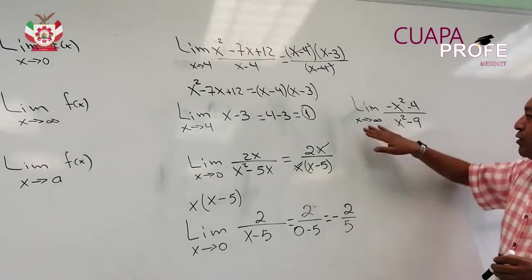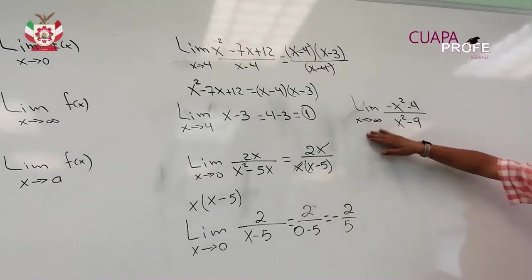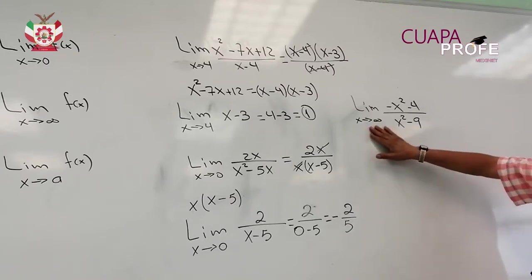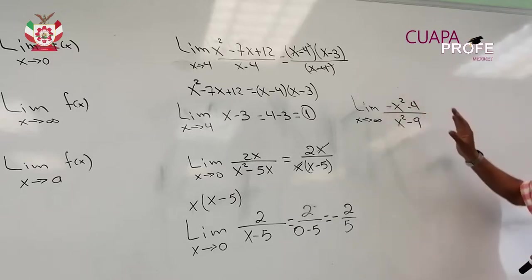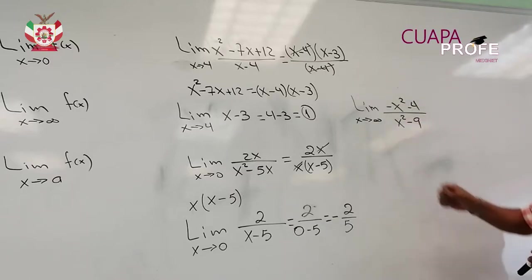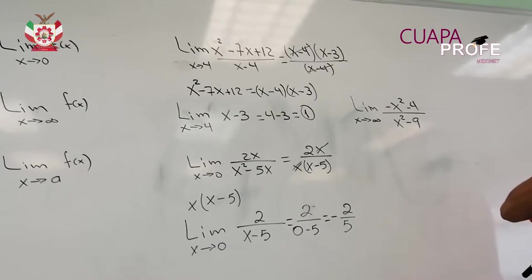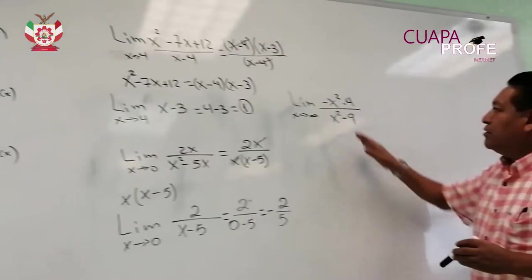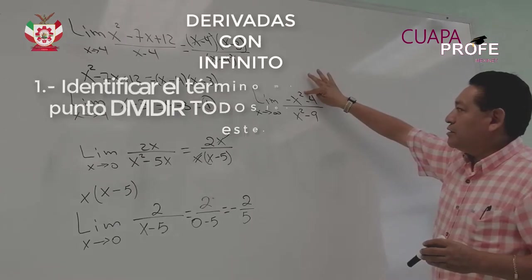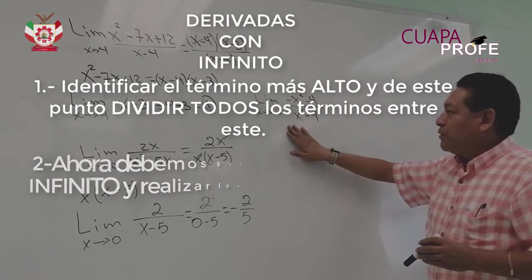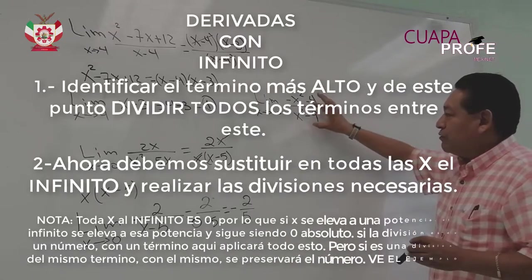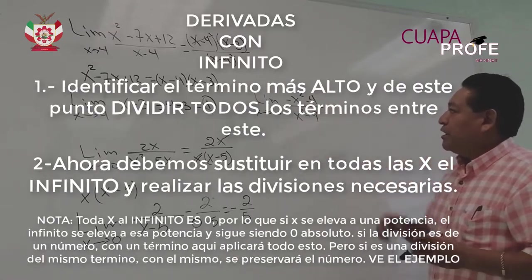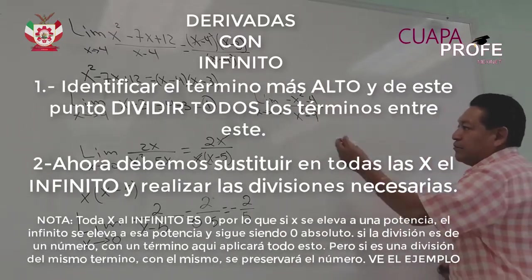El otro caso es cuando x tiende a infinito. Cuando x tiende a infinito, la recomendación que se hace es que observemos cuál es el exponente mayor de nuestra variable. En este caso, es un caso muy sencillo, y el exponente mayor es x cuadrada. Entonces, lo que vamos a hacer es dividir toda nuestra función, precisamente entre x cuadrada.